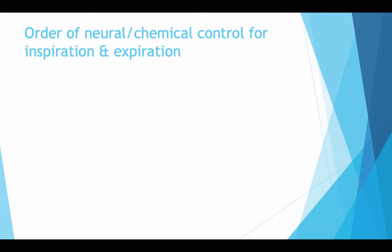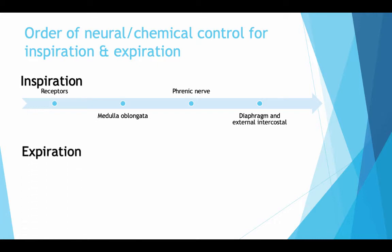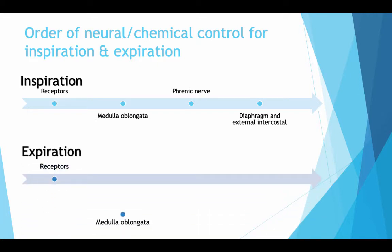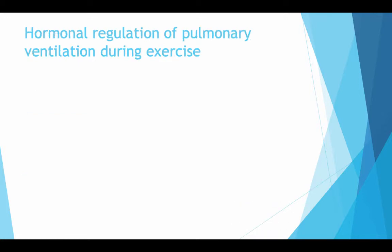Order of neural and chemical control for inspiration and expiration: the receptors send a signal to the medulla oblongata, which then sends it to the phrenic nerve, which sends a signal to the diaphragm and external intercostal muscles. For expiration, the receptors again send an impulse to the medulla oblongata, then to the intercostal nerve and the abdominals and intercostal muscles.